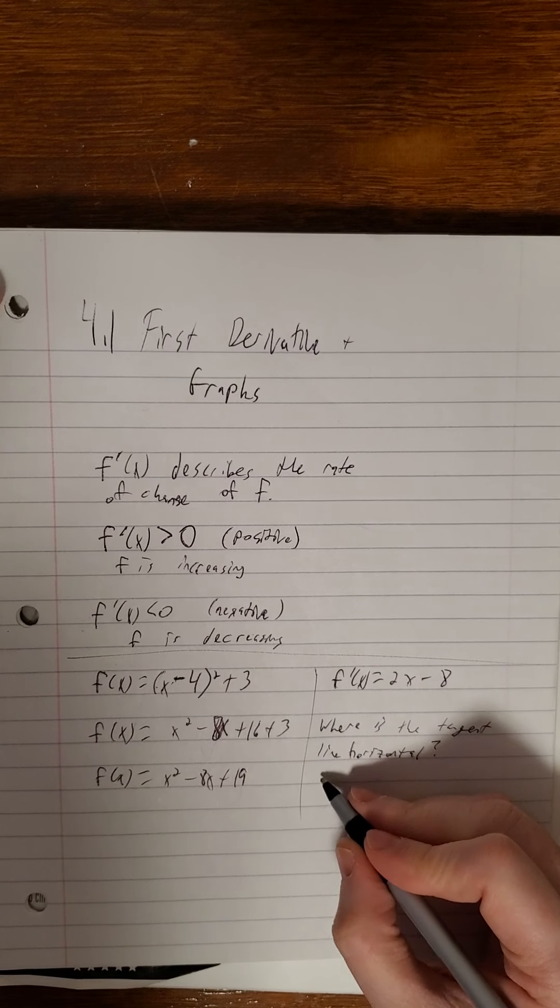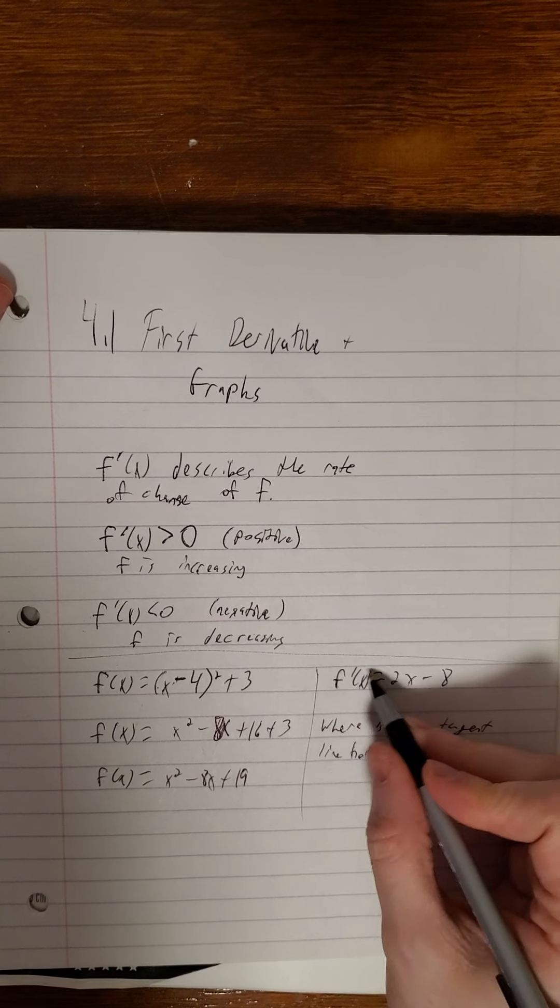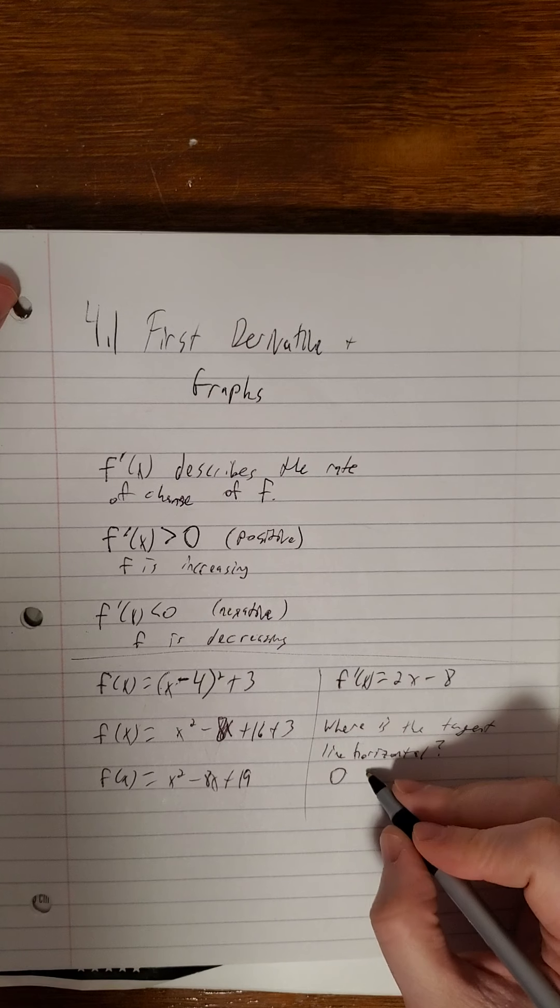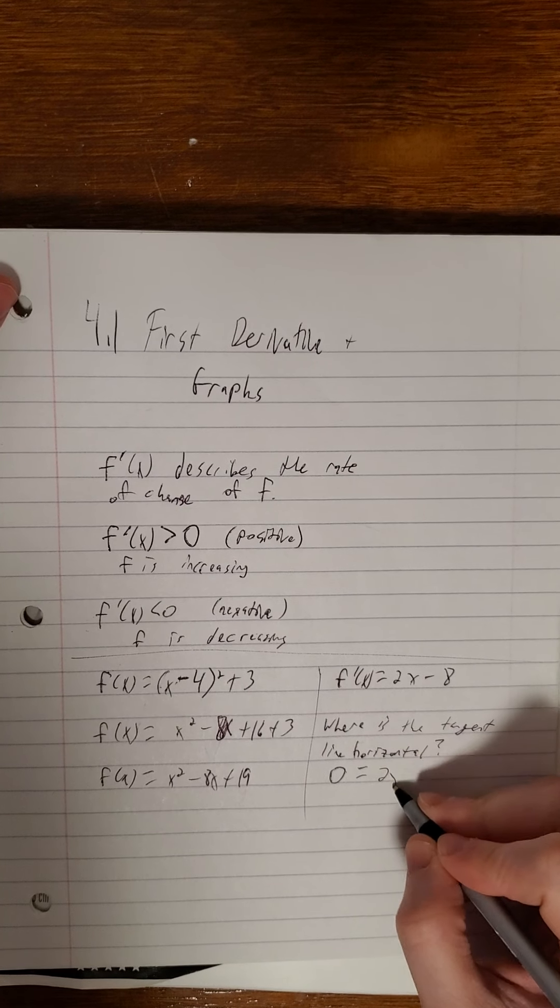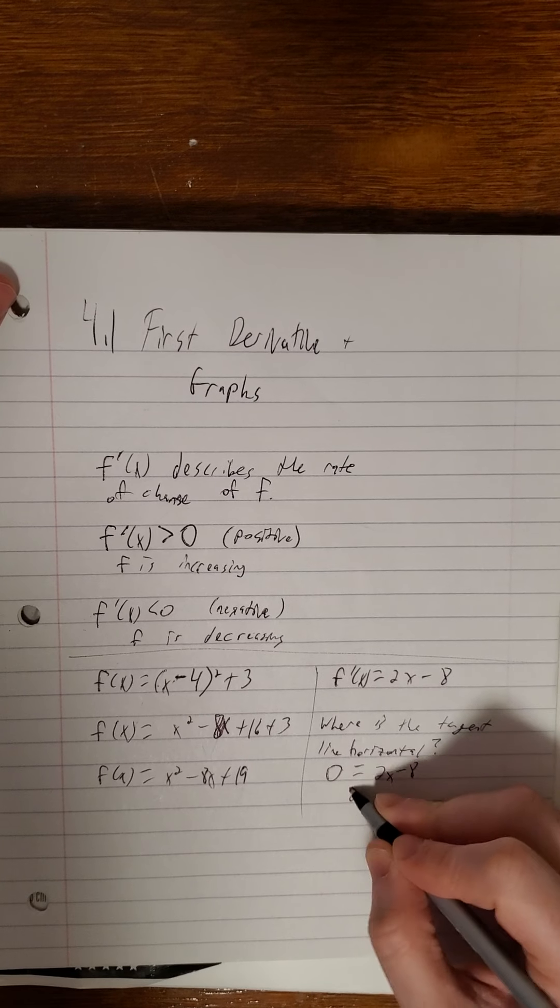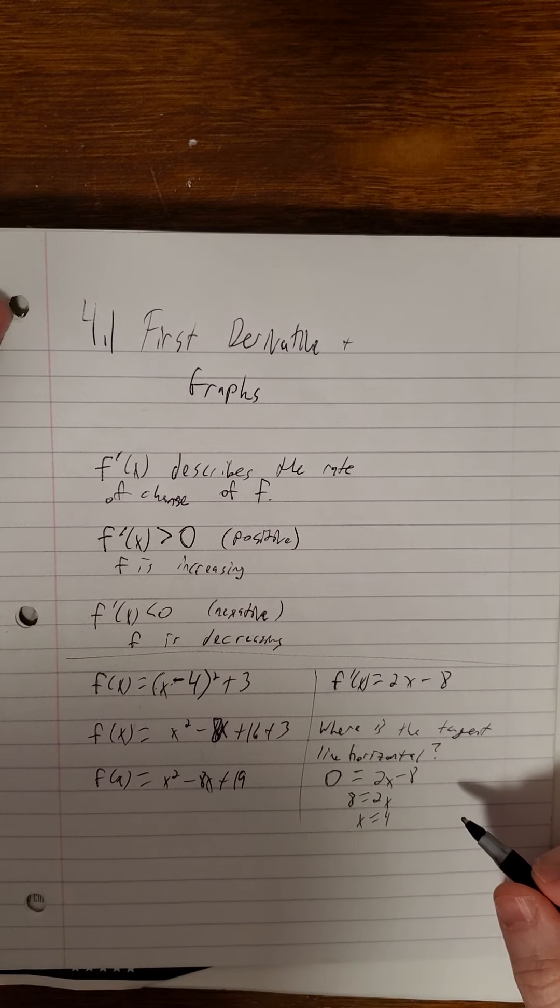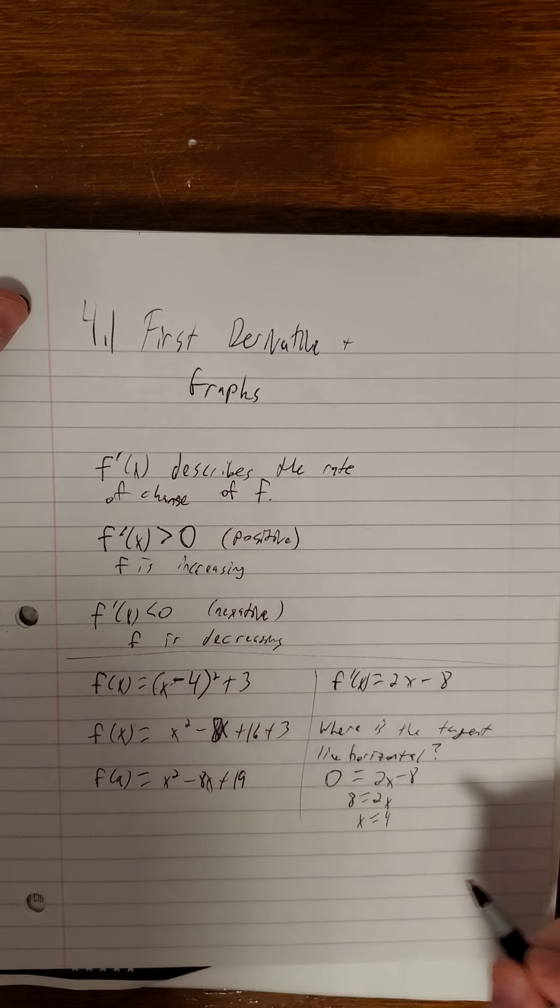Where is the tangent line going to be horizontal? Welcome back. If the tangent line is horizontal, that means our slope is 0. So 0 is 2x minus 8, so 8 is 2x, so x is 4. So the tangent line is horizontal when x is 4.